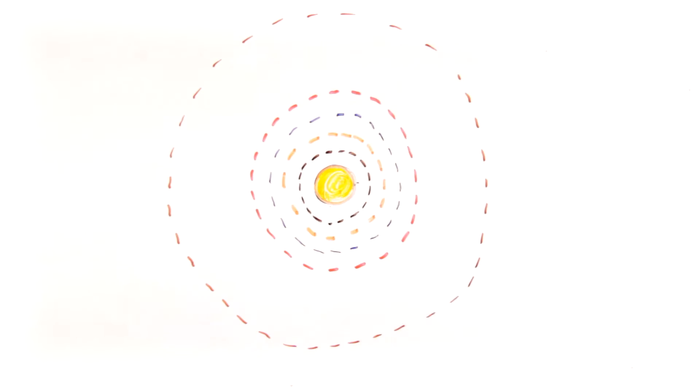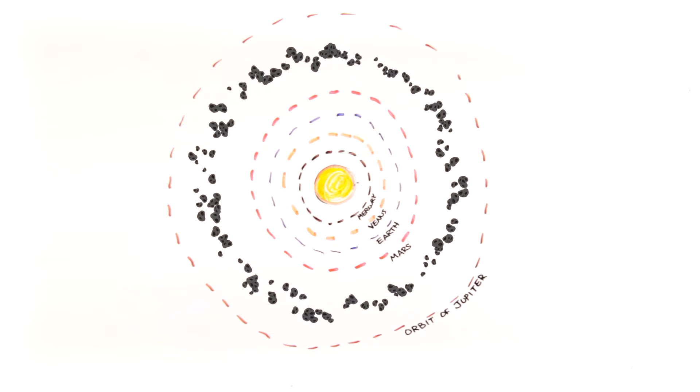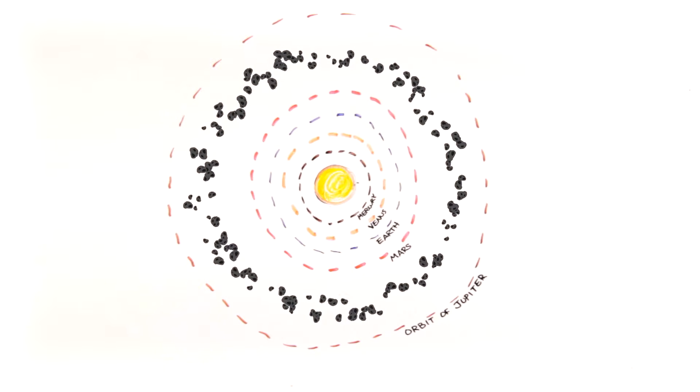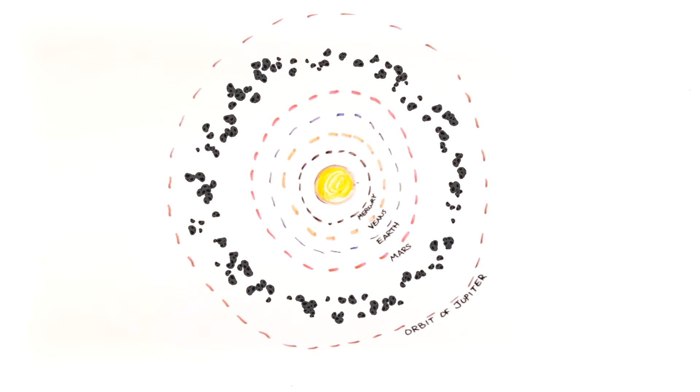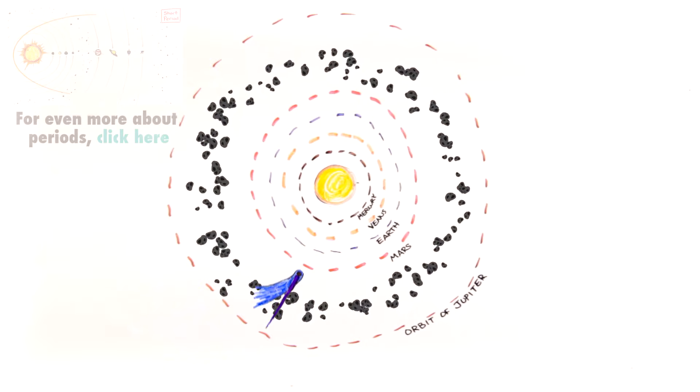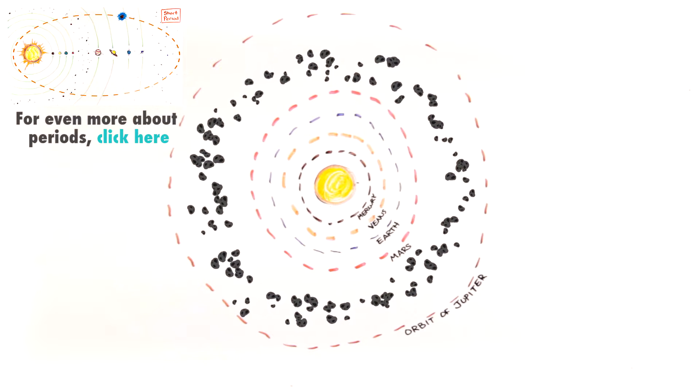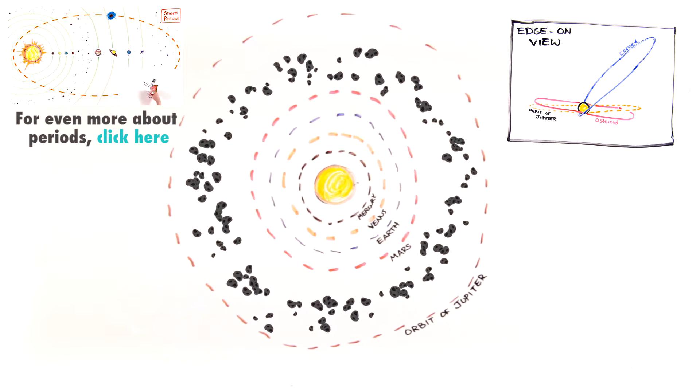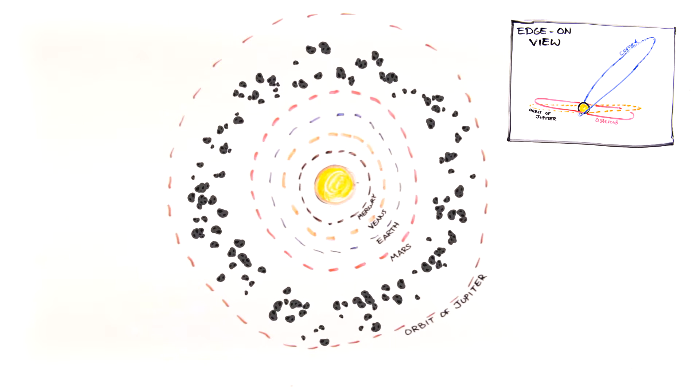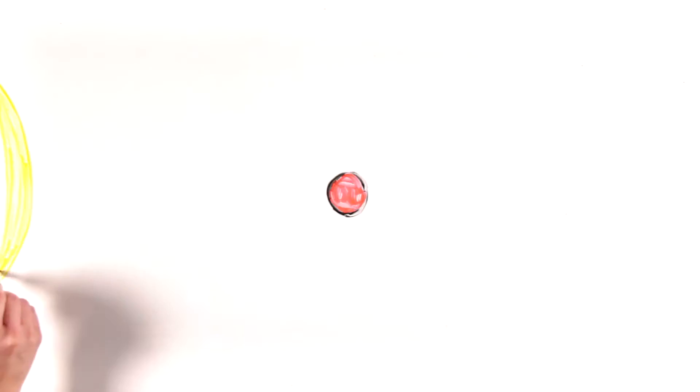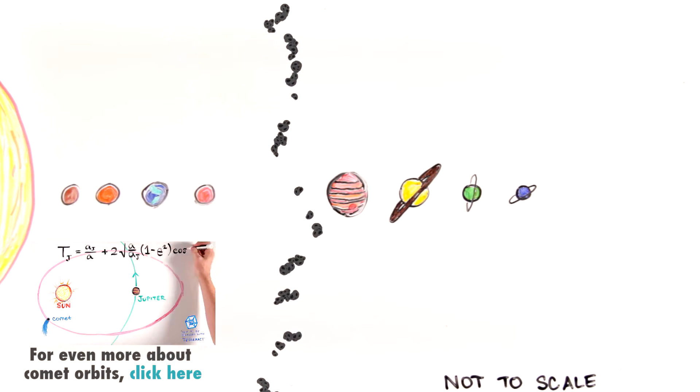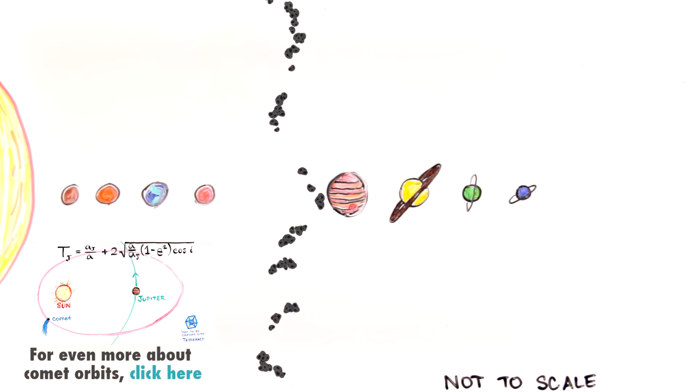In general, asteroids' orbits remain roughly circular, mostly stable over the life of the solar system, keeping millions of these objects between the Sun and Jupiter. The comets we observe are known for their highly elliptical orbits that can extend beyond Jupiter, and these orbits can be highly inclined from the plane of the solar system, whereas asteroids' orbits usually are not. Both asteroids and comets can leave their long-term orbits in reservoirs due to perturbations and close encounters.